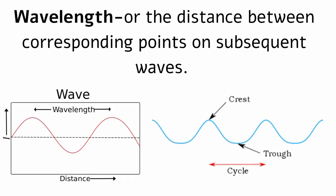Related to energy and frequency is the wavelength, or the distance between corresponding points on subsequent waves. You can measure wavelength from peak to peak, trough to trough, or between two consecutive corresponding points of waves.